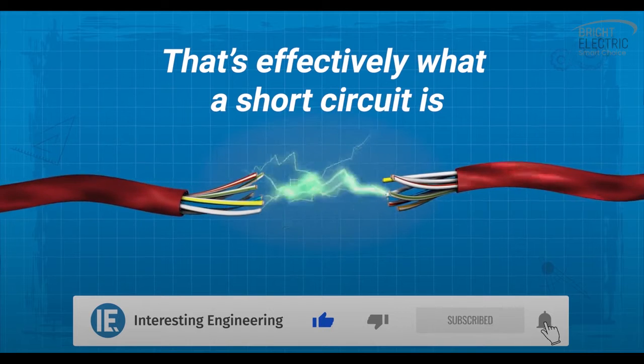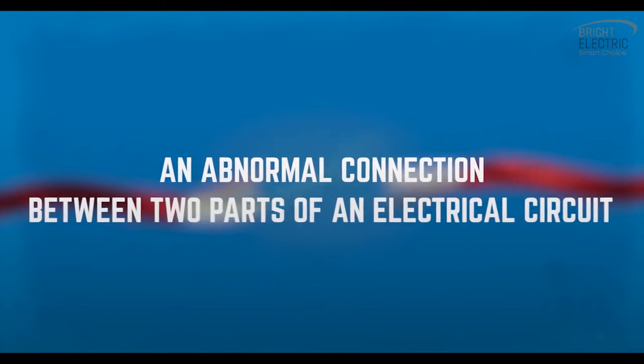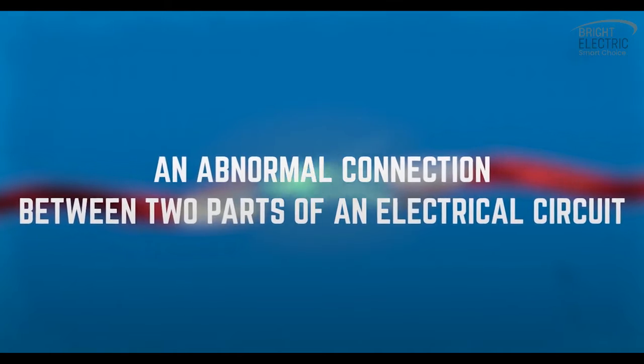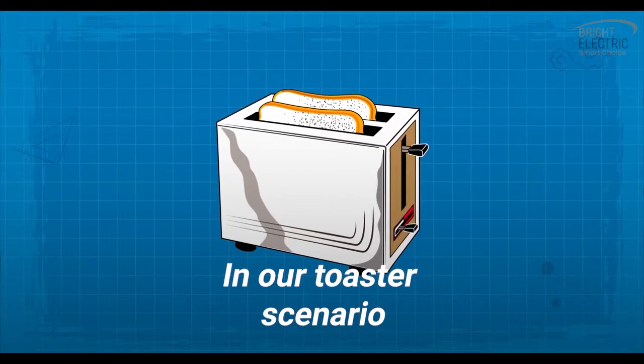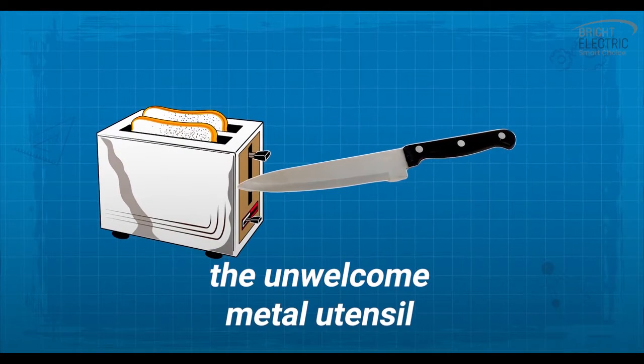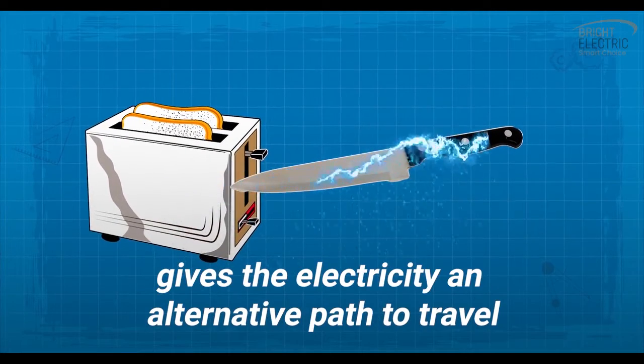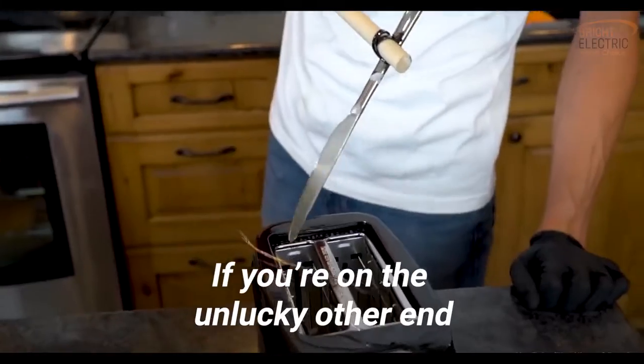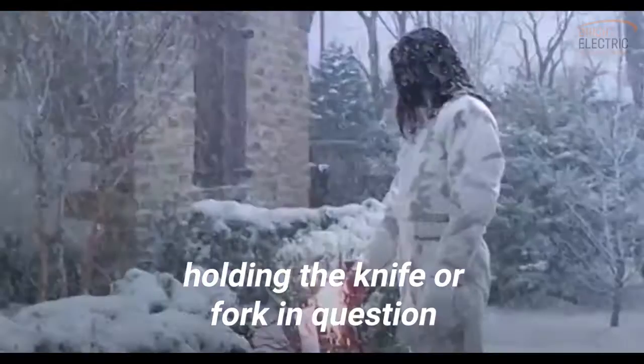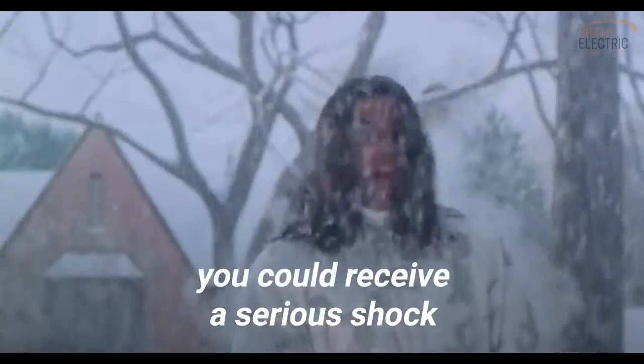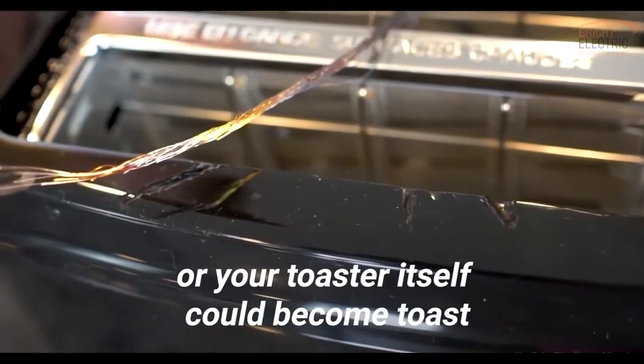That's effectively what a short circuit is: an abnormal connection between two parts of an electrical circuit. In our toaster scenario, the unwelcome metal utensil interrupts the closed circuit and gives the electricity an alternative path to travel. If you're on the unlucky other end holding the knife or fork in question, you could receive a serious shock, or your toaster itself could become toast.